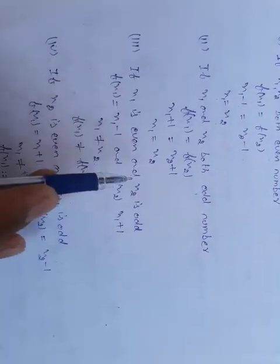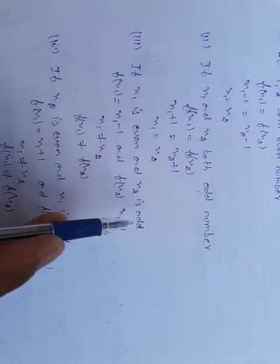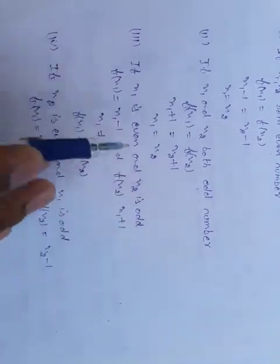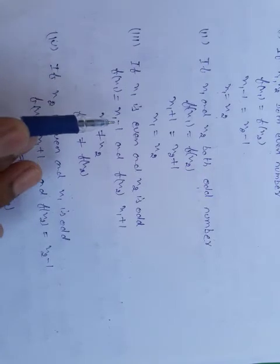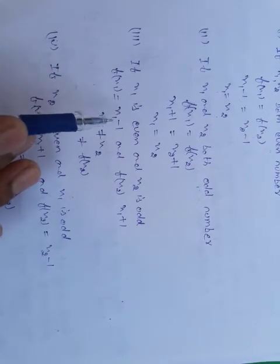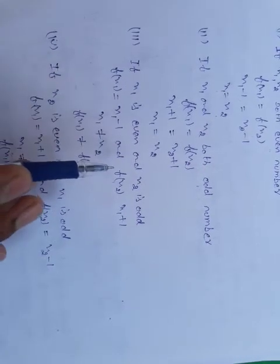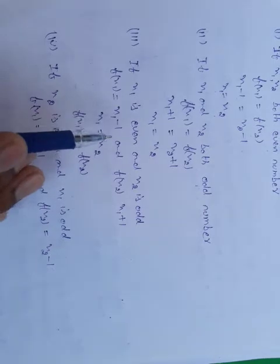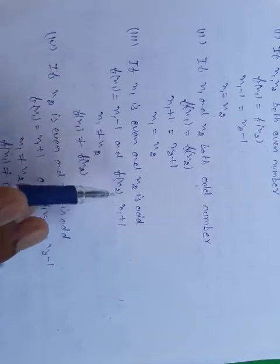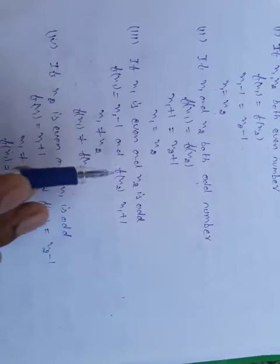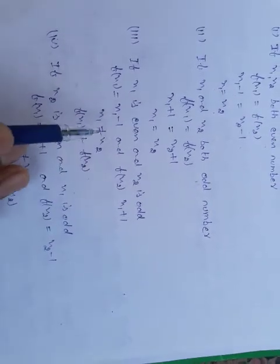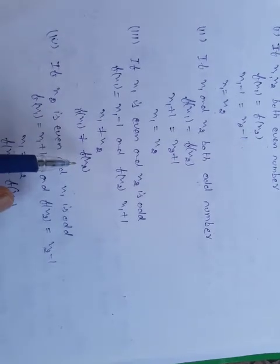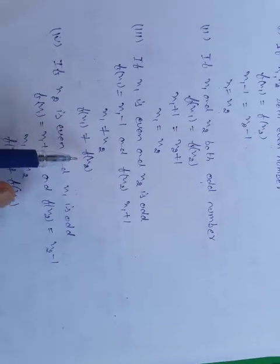Case 3: If x1 is even and x2 is odd, then f(x1) = x1 − 1 (even case) and f(x2) = x2 + 1 (odd case). Since even minus 1 is odd and odd plus 1 is even, f(x1) is not equal to f(x2).